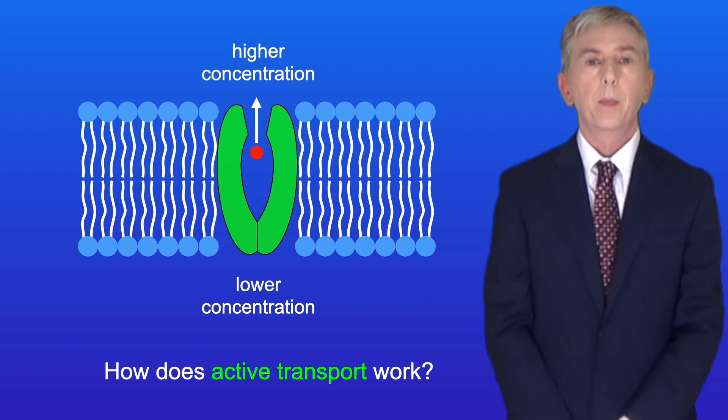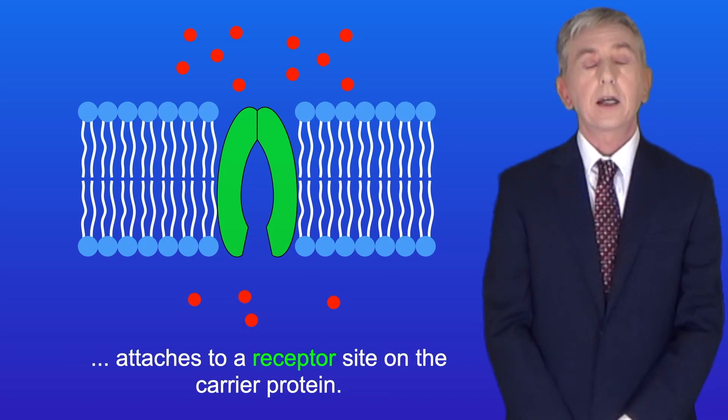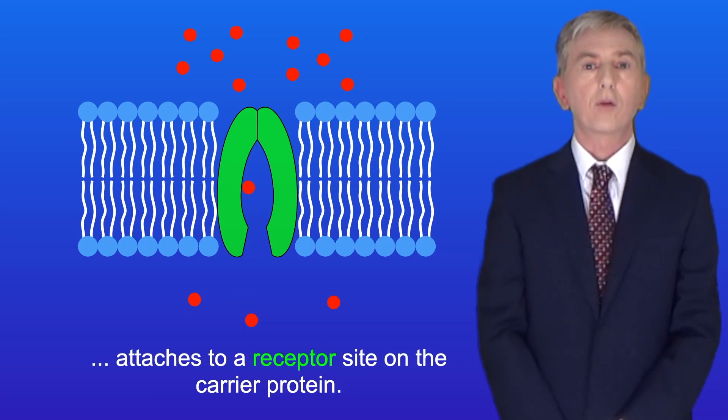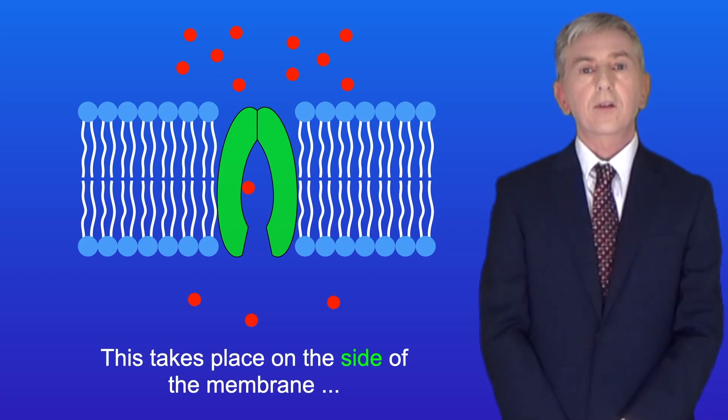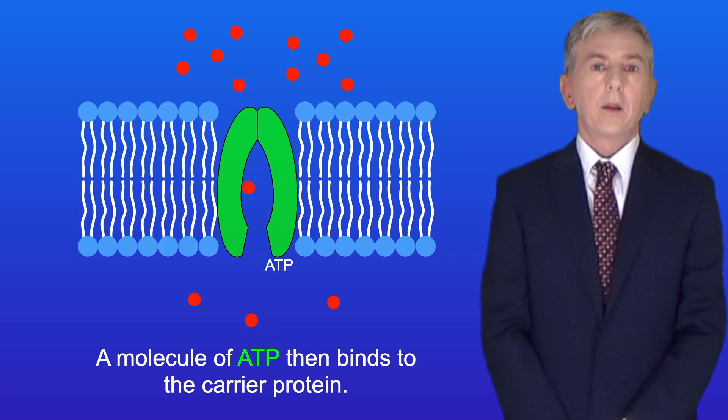So how does active transport work? During active transport, the molecule or ion to be transported attaches to a receptor site on the carrier protein. This takes place on the side of the membrane where the chemical is at a lower concentration. The molecule of ATP then binds to the carrier protein.